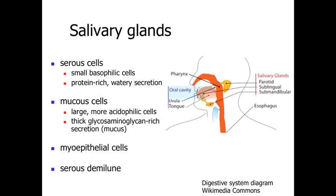The first glands we're going to talk about — and we indicated this in the second lecture in this series — are the salivary glands. The salivary glands are a collection of glands found in and around the oral cavity, involved with releasing secretions into the oral cavity to help moisten and lubricate the food, as well as to start the digestion process. We're going to have the parotid salivary gland sitting to the back of the oral cavity, the sublingual salivary gland sitting underneath the tongue, and the submandibular salivary glands sitting underneath the mandibular bone.